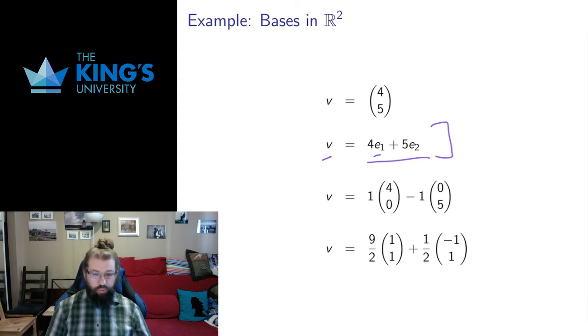I can also express it in terms of different bases. So (4, 0) and (0, 5), so the non-unit vector of length 4 in the x direction and the non-unit vector of length 5 in the y direction are also a basis of R². They're linearly independent and my vector v is 1 times this plus 1 times this. So it can also be expressed in that basis.